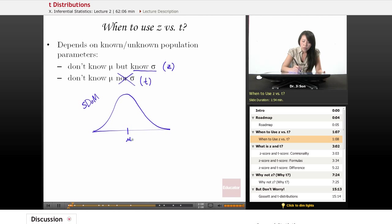Although mu sub X-bar equals mu, given the central limit theorem, what we often want to know is if we have an X-bar that falls here, or an X-bar that falls here, or an X-bar that falls somewhere like here. We want to know how far away it is from the mu sub X-bar.